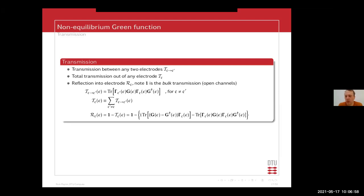You cannot lose an electron, so you really have to have unity here — this obeys Kirchhoff's laws and particle conservation. That is also why you can calculate the reflection, which is just one minus your total transmission out of your electrode. Here, one means your bulk transmission, i.e., your open channels. TB-trans can also calculate your bulk transmission, making it quite trivial to figure out how many open channels you have in a specific electrode. This calculation is a little bit more elaborate, but not too difficult.